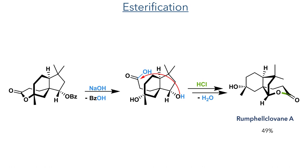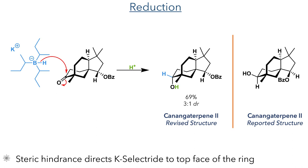This compound could be reacted further to form Cananga-Terpene-2. To do this, they used a benzoylated intermediate from the synthesis of Rumpfyl-Clovane-A and reduced it with potassium selectride. This is a very sterically bulky reducing agent that preferentially attacks from the top face of the carbonyl. This produced the target compound in a 69% yield with a 3-to-1 DR. This synthesis allowed the authors to prove the structure of Cananga-Terpene-2, as the previously reported structure was shown to have incorrect stereochemistry at both the benzoylated and hydroxylated positions.